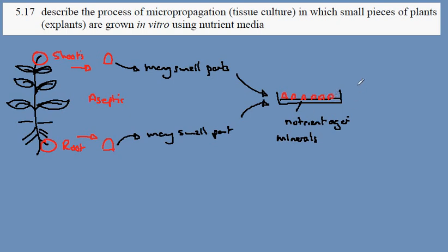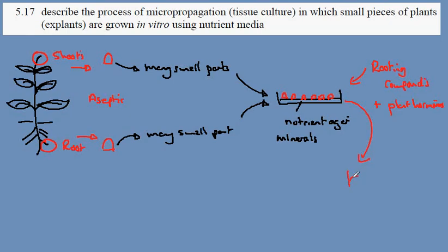In addition to the minerals, there will also be some rooting compounds and other plant hormones. These will encourage the growth of each of the small parts into a small clone of the original plant.